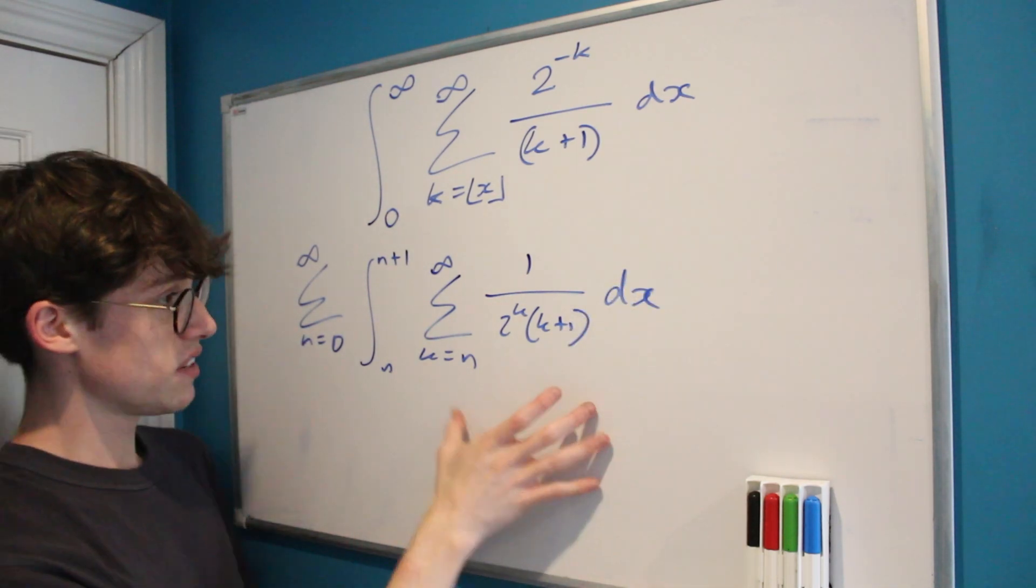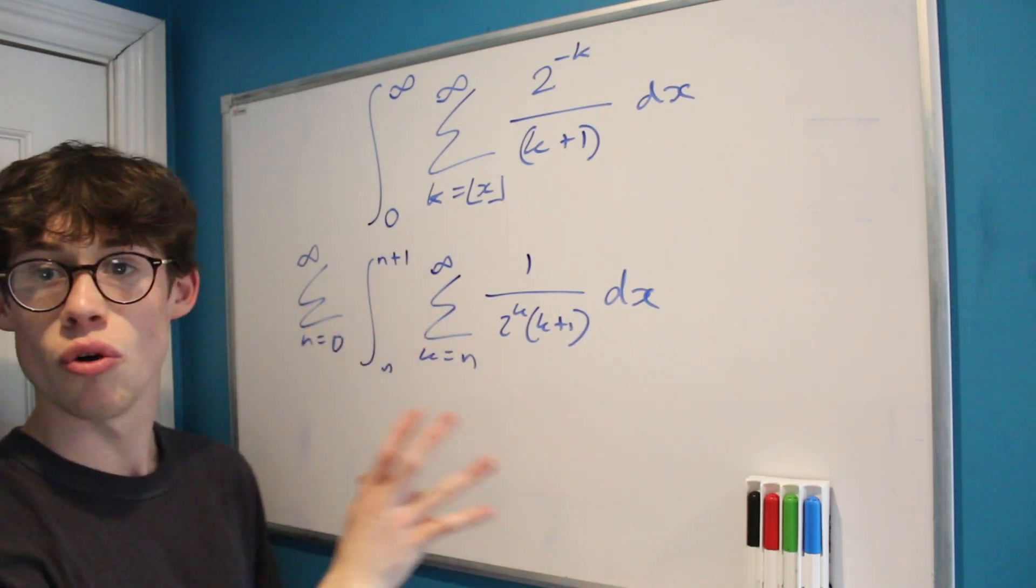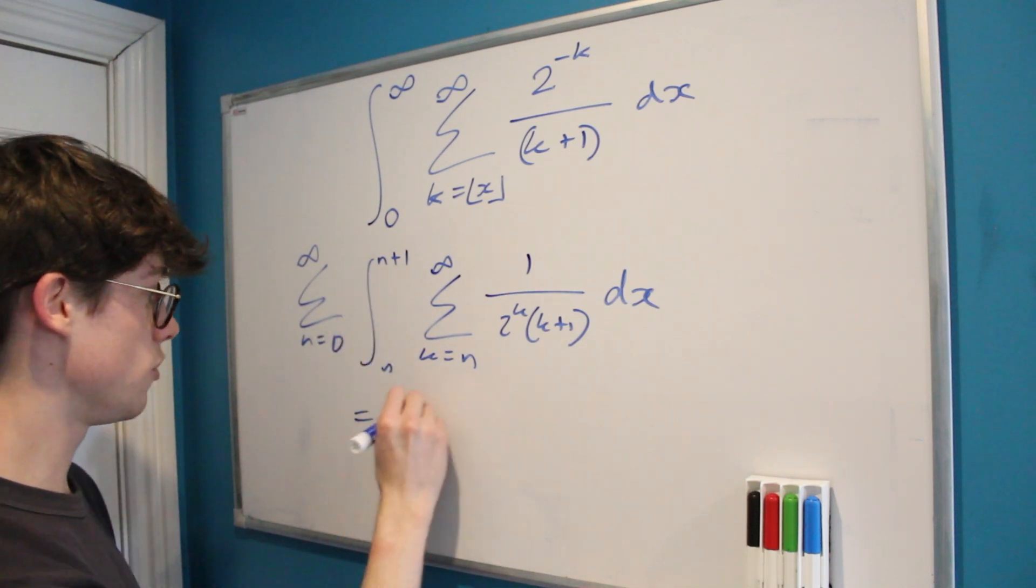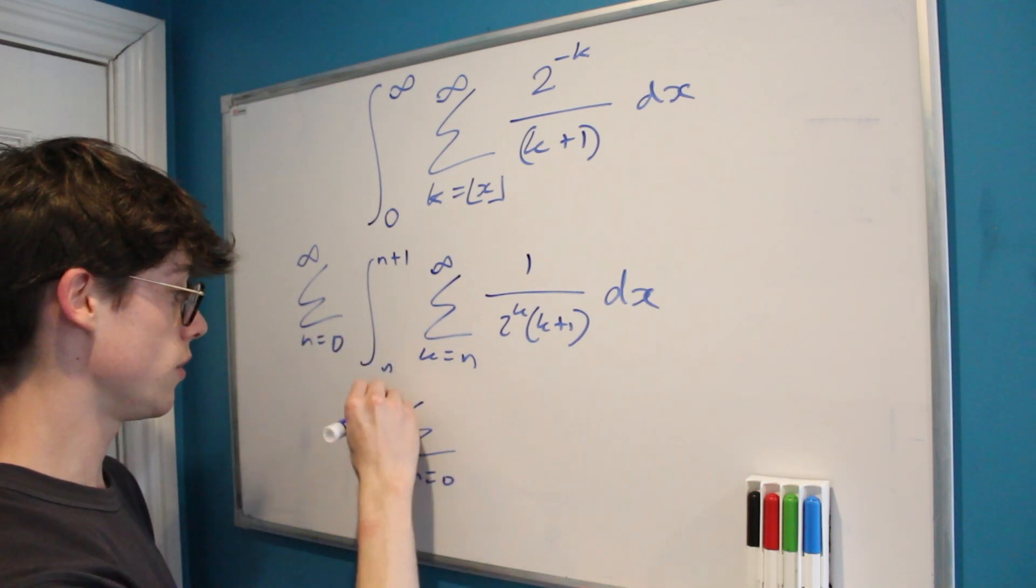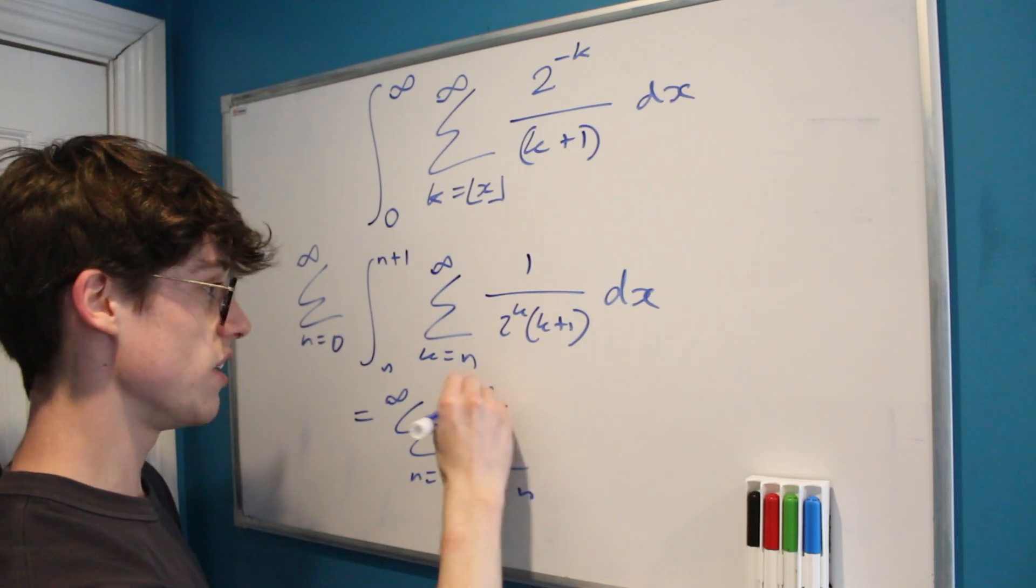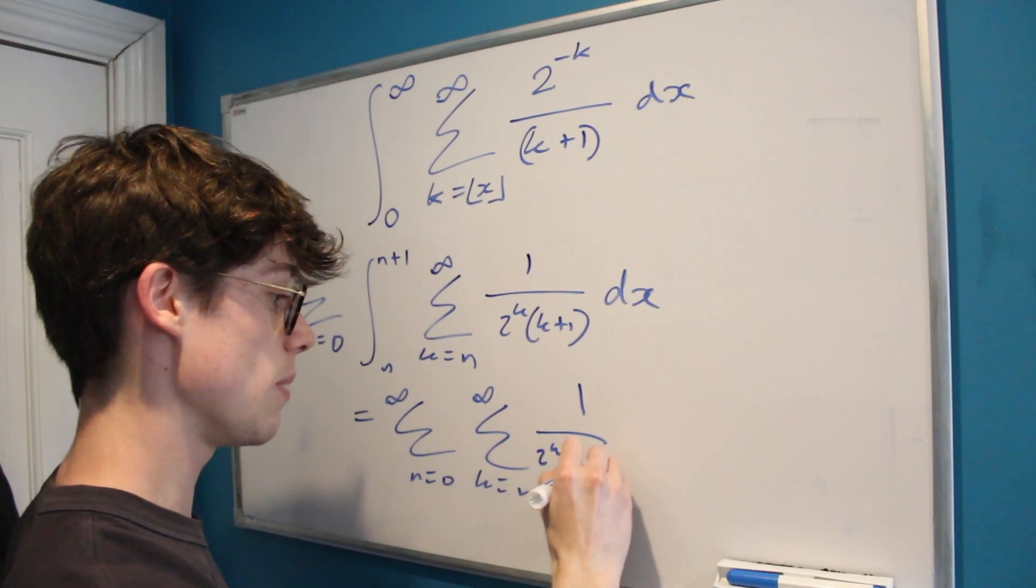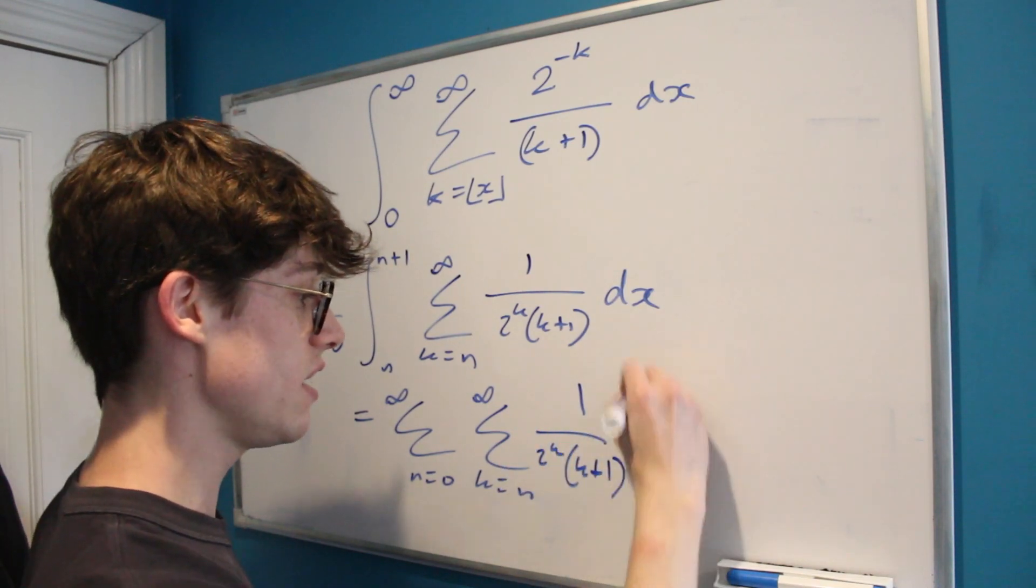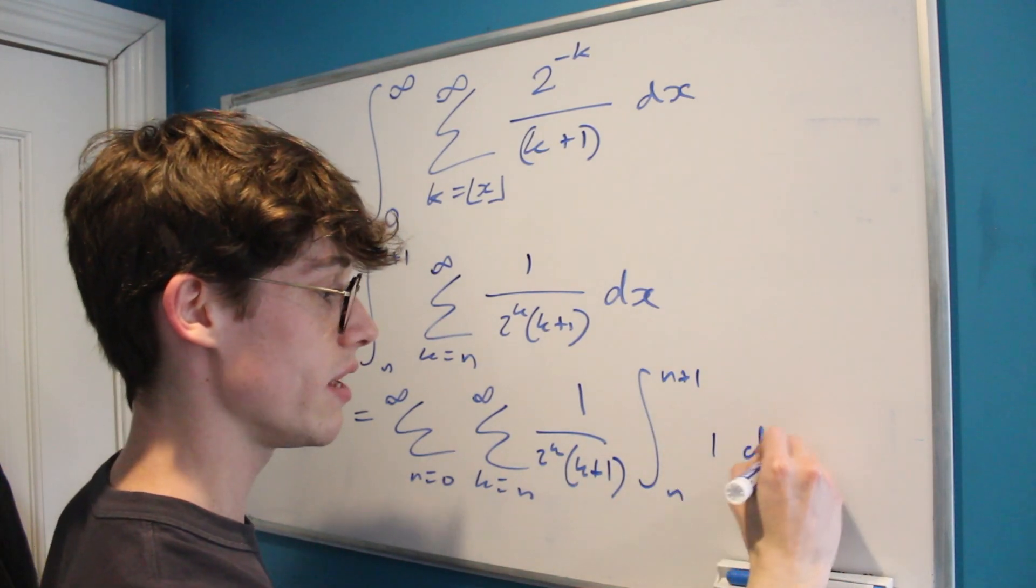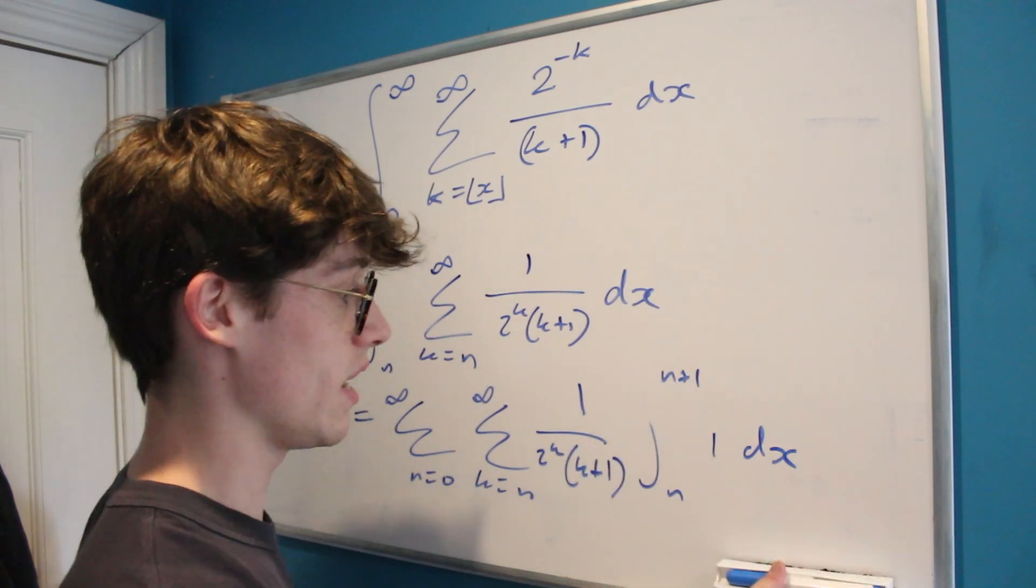Now you might notice that actually everything within our integral now does not depend on x, so we can put it out. And let's do that. So this is equal to the sum from n equals 0 to infinity of the sum from k equals n to infinity of 1 over 2 to the k times k plus 1 times the integral from n to n plus 1 of 1 dx.